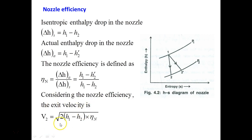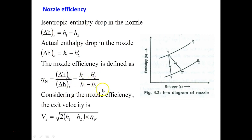Nozzle efficiency ηₙ = ΔH_actual / ΔHs = (H₁ − H₂') / (H₁ − H₂). Considering nozzle efficiency, the exit velocity of steam is: V₂ = √(2(H₁ − H₂) × ηₙ). When nozzle efficiency is given, multiply by it; normally it is 0.9 to 0.99. If the value is not given in the problem, assume ηₙ = 1. You must remember this nozzle efficiency equation.